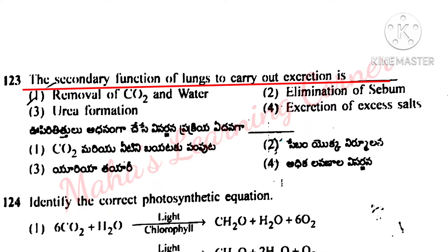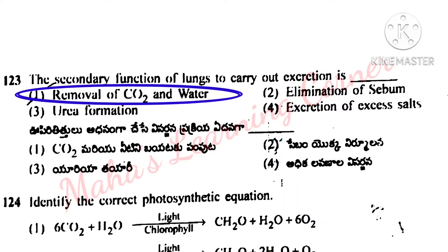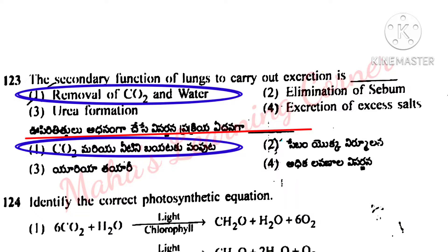The secondary function of lungs to carry out excretion is? Options: removal of CO2 and water, elimination of sebum, urea formation, excretion of excess salts. Correct answer is option 1: removal of CO2 and water.